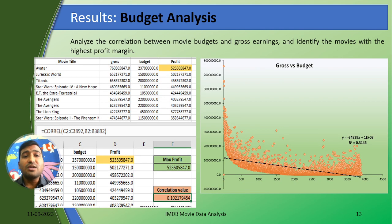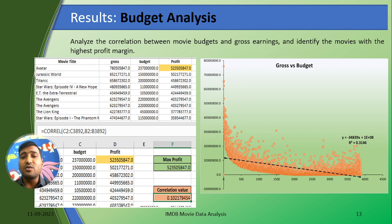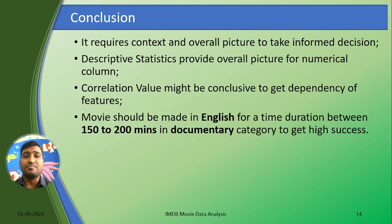Coming to the budget analysis, the Avatar movie has earned the maximum profit. The correlation between gross and budget is 0.1021, which is very much insignificant. Looking at the scatter chart, the trend line is going downward.